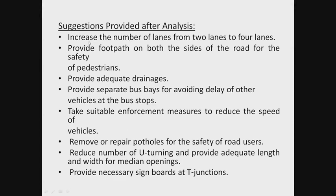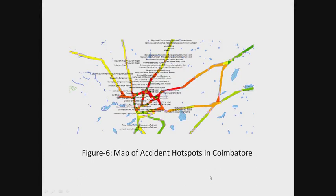The suggestions were: increase the number of lanes from 2 to 4, provide footpaths on both sides of the road for pedestrian safety, provide adequate drainage, provide separate bus bays to avoid delays, take suitable enforcement measures to reduce vehicle speed, remove or repair potholes, reduce the number of U-turns and provide adequate median opening lengths, and provide necessary sign boards at T-junctions. The map shows accident hotspots in Coimbatore, with red indicating major hotspots and orange, yellow, and green indicating progressively fewer accidents.